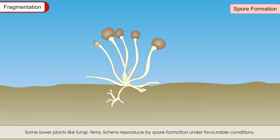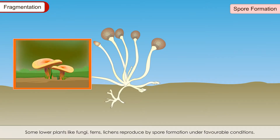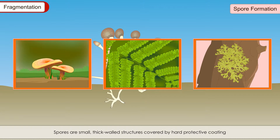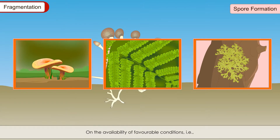Spore Formation: Some lower plants like fungi, ferns, and lichens reproduce by spore formation under favourable conditions. Spores are small, thick-walled structures covered by a hard protective coating that helps them to survive in harsh weather conditions. On the availability of favourable conditions — sufficient food, right temperature and moisture — these spores grow into a new organism.